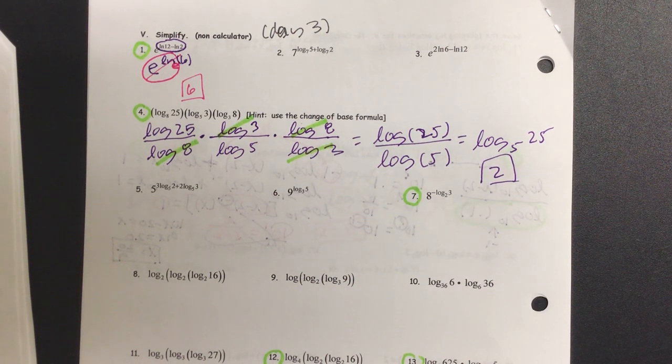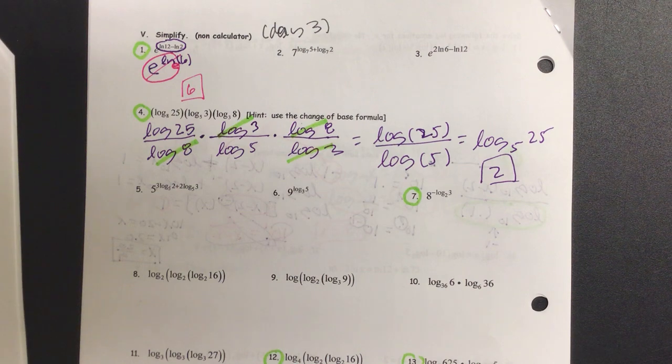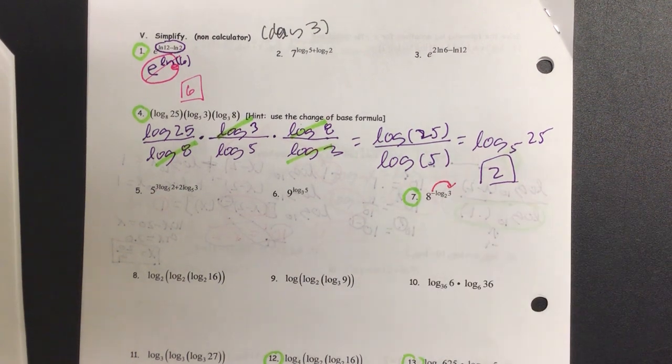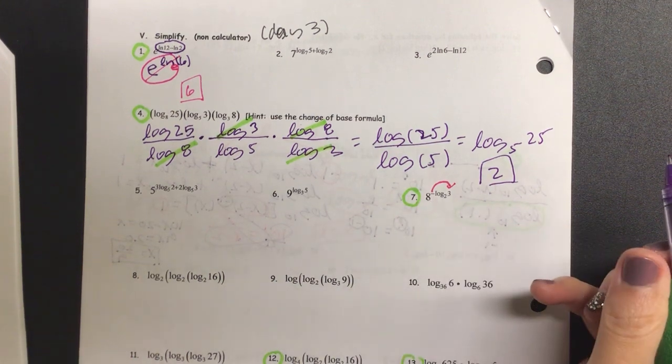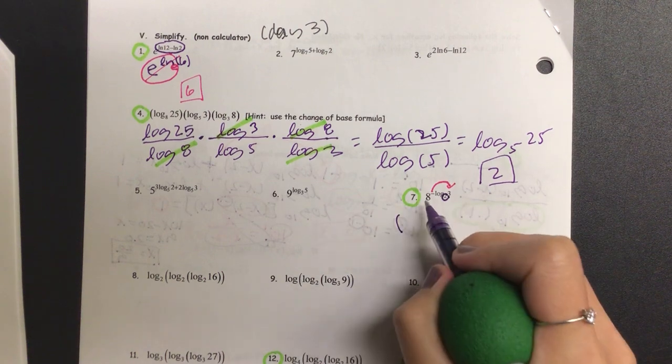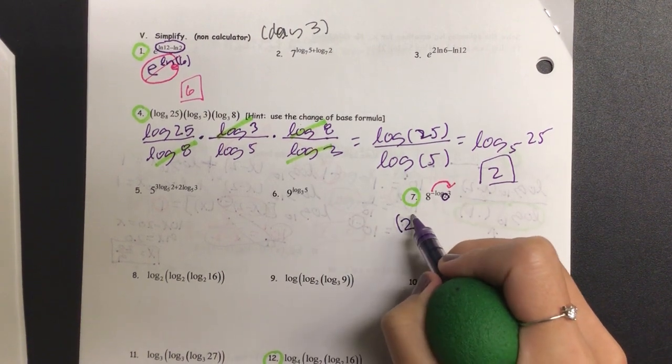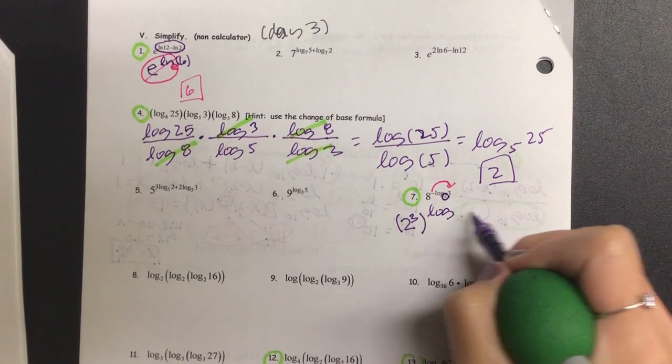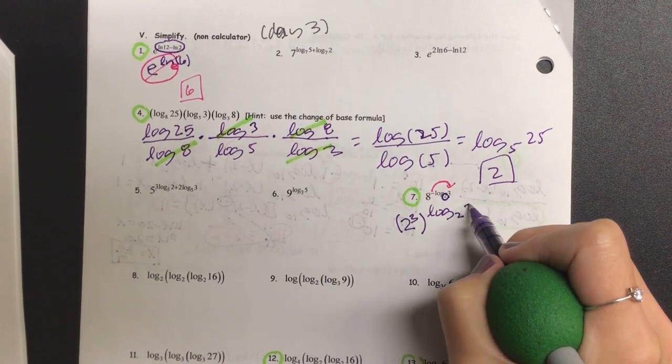Okay, let's go on to number 7. On number 7, I am going to put this negative to the power. And I'm also going to change the 8 into something with the base number of 2. So to get 8, we have 2 to the power of what? 3. And then we have log base 2 of 3 to the negative 1.